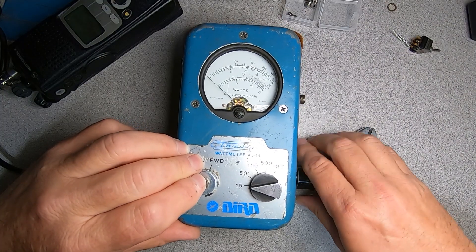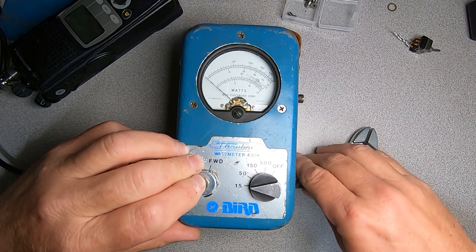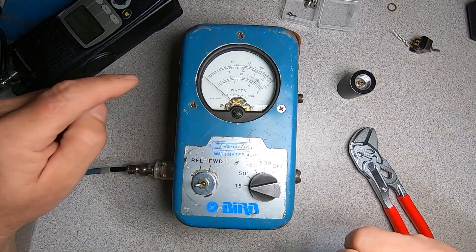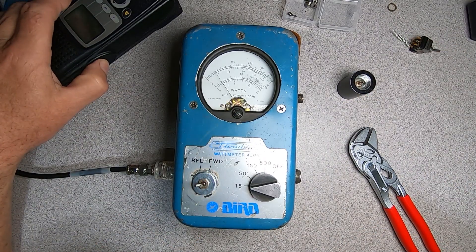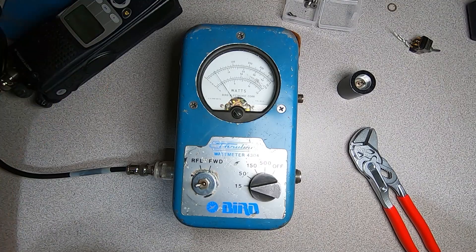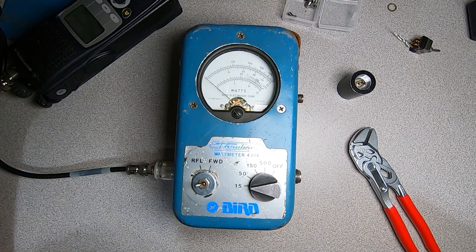Let's remove our dummy load here and induce a significant mismatch. We should see a significant amount of power reflected on our meter. And we do. So good news.